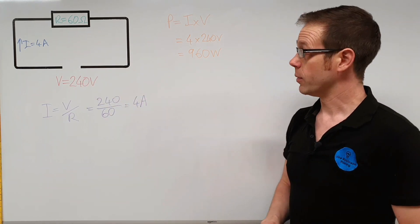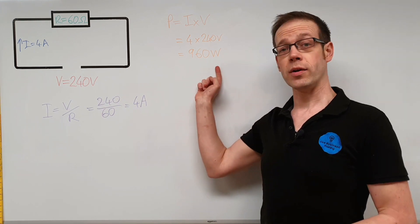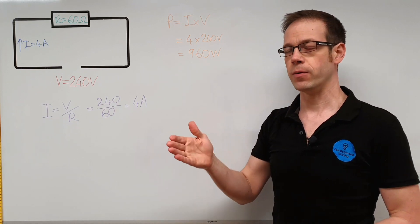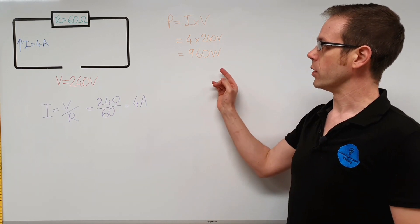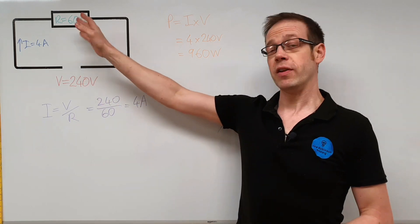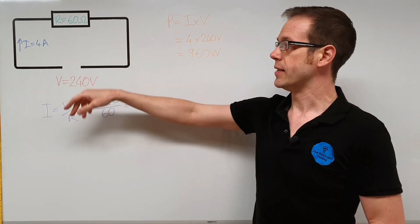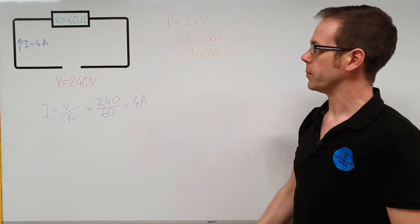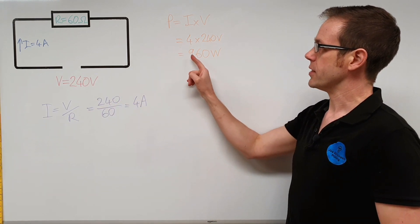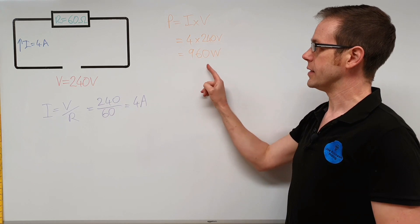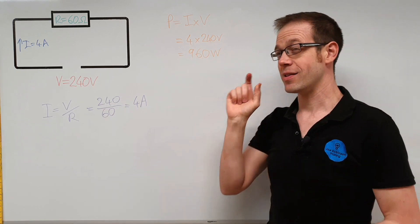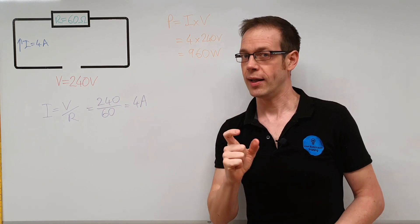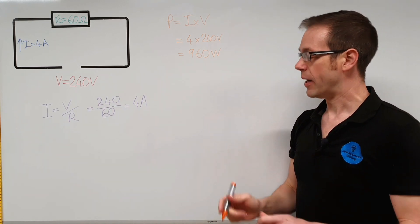Now that's an interesting value because actually we're very close there to the one kilowatt value that we had of our heater in a previous video, where we measured the current and the voltage being applied to that one kilowatt heater. So 60 ohms is roughly the resistance of a one kilowatt heater when it's designed to be connected up to a 230-240 volt supply. Anyway, the power being dissipated by that resistor is 960 watts. So that's a significant value because that's the number that we should get out from our other power calculations as well.